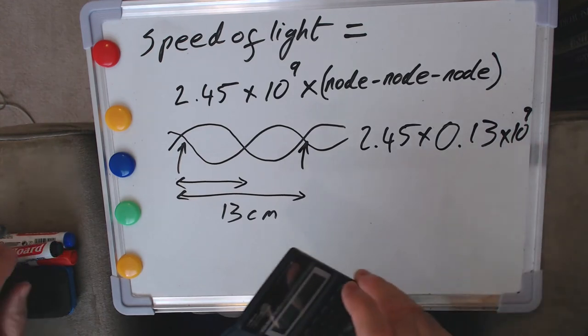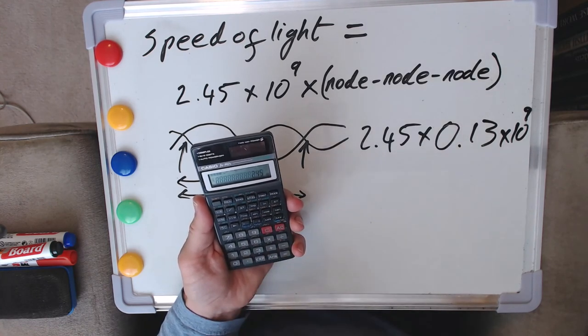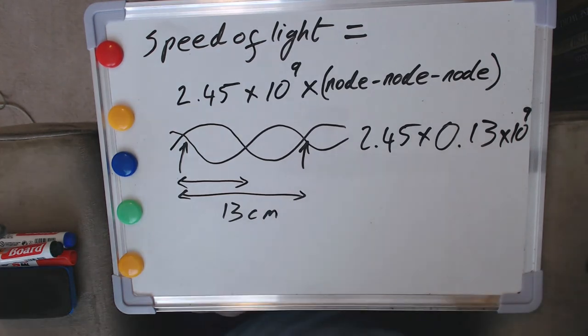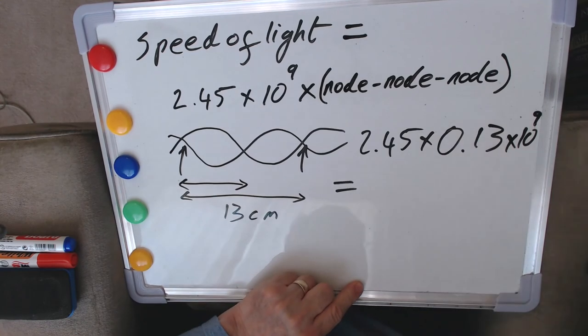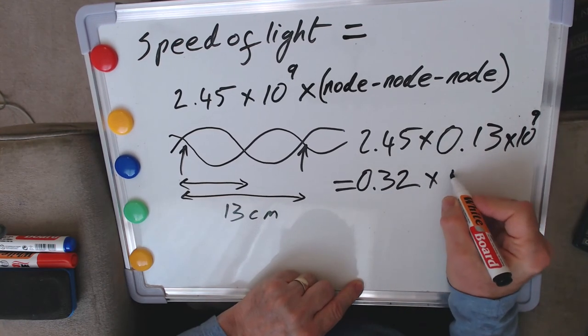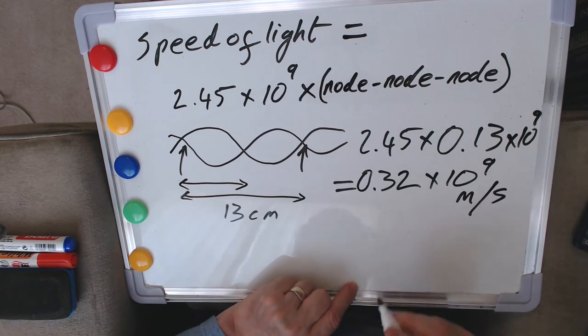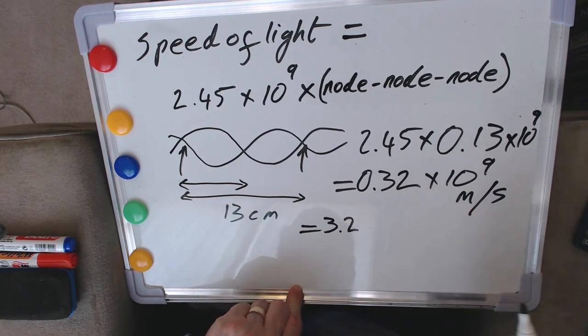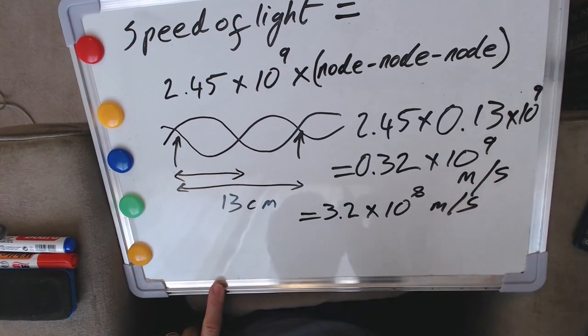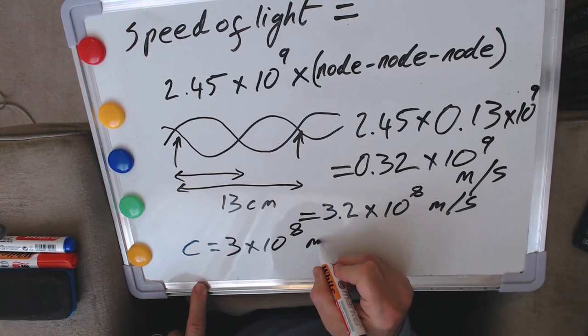So what we have then as our sum is 2.45 multiplied by this is 0.13 of a meter, we've got to keep our units consistent, and that all is multiplied by 10 to the power of 9 still. We can put those numbers into our calculator, that's an easy thing to do of course. So here we go, 2.45 multiplied by 0.13 and we need to not forget our 10 to the 9, but anyway this comes out to be 0.32 times 10 to the 9, and the units we've using here means that this is in meters per second. I'm just going to rewrite this as 3.2 times 10 to the 8 meters per second, and I'm going to do that because in most textbooks you'll see the speed of light written as 3 times 10 to the 8 meters per second.